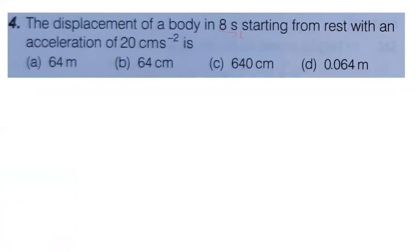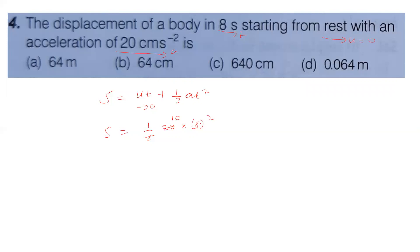Time is 8 seconds, starts from rest so initial velocity u equals 0, acceleration is 20 centimeter per second square. Displacement equals uT plus half A T squared. With u equals 0, displacement equals half into 20 into 8 squared equals 10 into 64 equals 640 centimeter. So displacement is 640 centimeter.